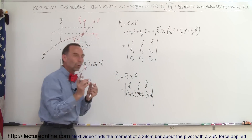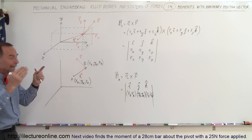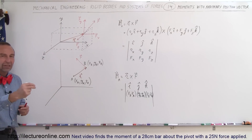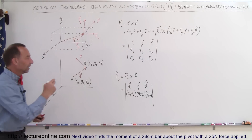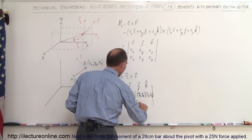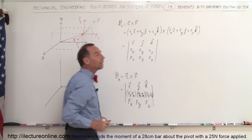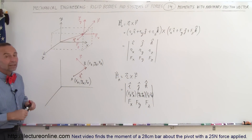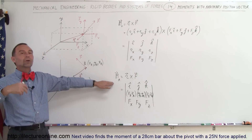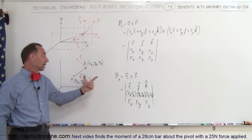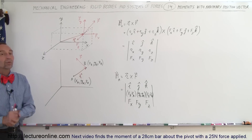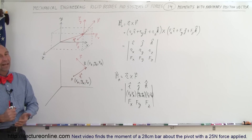You want to find the magnitude of the position vector, which is simply the difference between the X values, the Y values, and the Z values — where the position vector starts (the point of rotation) to where it ends (the point at which the force acts). The force itself will still be F sub X, F sub Y, and F sub Z. You then execute the vector cross product that way. That's how you find the moment of a force: by realizing where it's acting, finding the magnitude of each component of the position vector, and then computing the cross product with the force vector components.